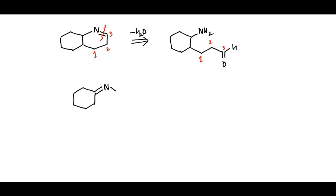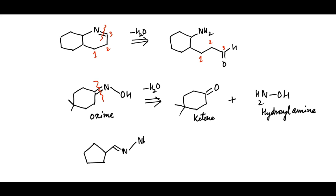In case of this oxime derivative, retrosynthesis can be done in similar way. Breaking C=N double bond gives 4,4-dimethylcyclohexanone and hydroxylamine. This hydrazone on retrosynthesis shows that it has been formed from this hydrazine and this aldehyde.